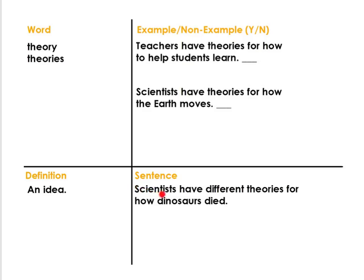Let's read the sentence: Scientists have different theories for how dinosaurs died. Now example or non-example: Teachers have theories for how to help students learn. And: Scientists have theories for how the Earth moves.